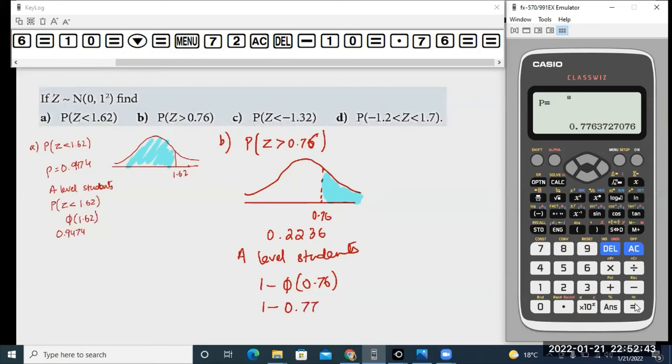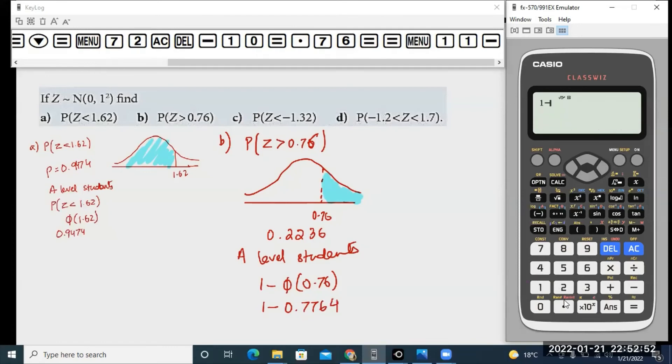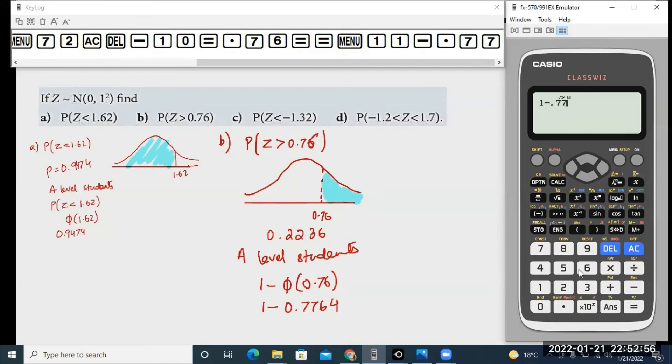So on your A-level math exam, you have to show a certain amount of working before you get to your final answer. Then you go to normal mode and do your subtraction: 1 minus 0.7764, and you end up with the same answer.